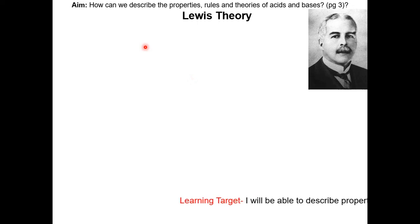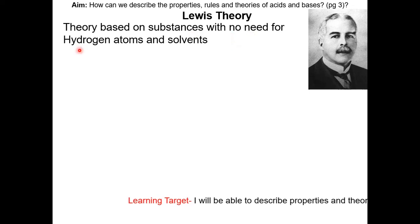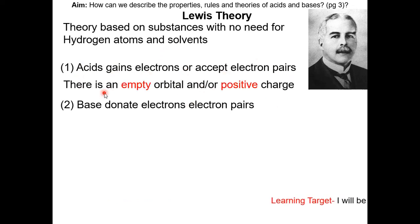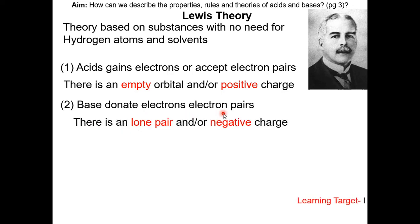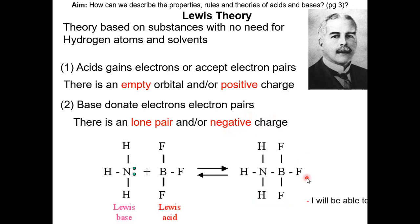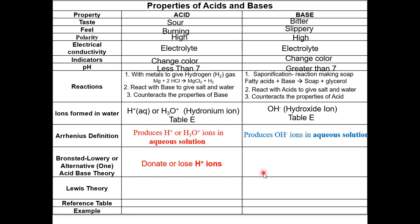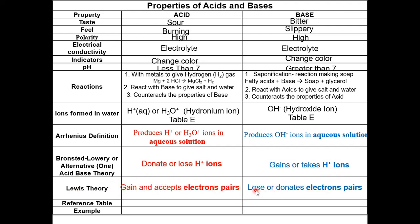The last theory is the Lewis theory, which is based on substances with no need for hydrogen atoms or solvents. Acids gain or accept electron pairs — this is because acids typically have an empty orbital or a positive charge. Bases donate electron pairs — this is because bases typically have a lone pair or a negative charge. An example: NH3 is a Lewis base reacting with BF3, which is a Lewis acid. In summary: Arrhenius — acid produces H⁺ in aqueous solution, base produces hydroxide. Brønsted-Lowry — acid donates H⁺, base gains H⁺. Lewis — acid gains electron pairs, base donates electron pairs.